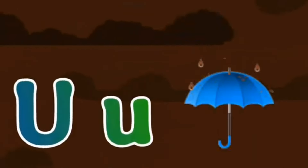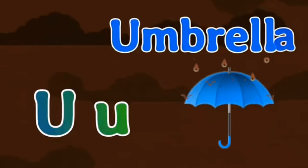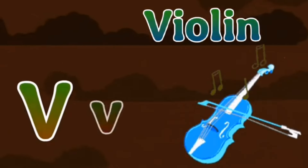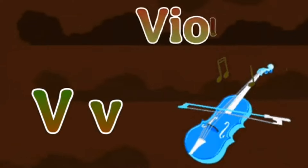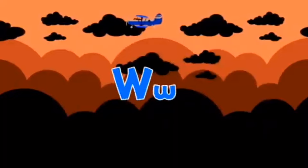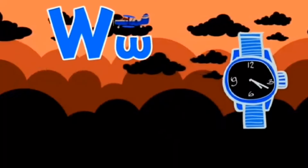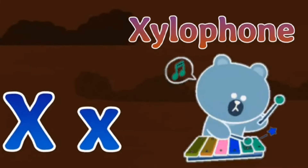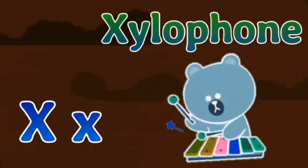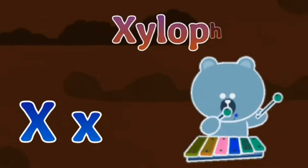U is for Umbrella, U-U-Umbrella. V is for Violin, V-V-Violin. W is for Watch, W-W-Watch. X is for Xylophone, X-X-Xylophone.